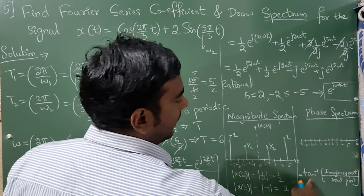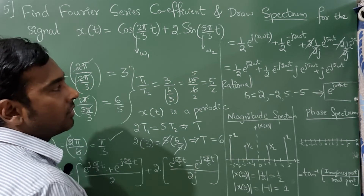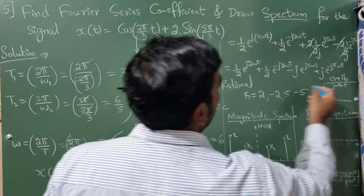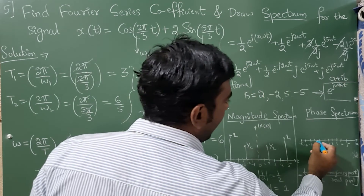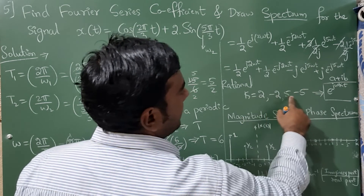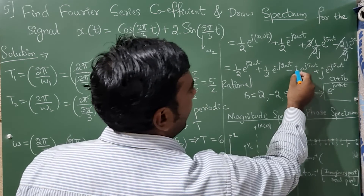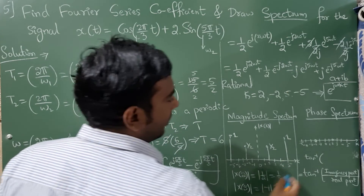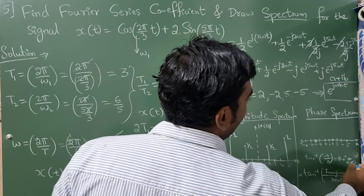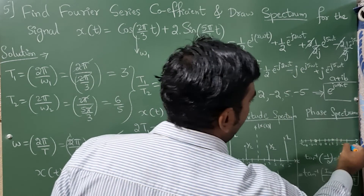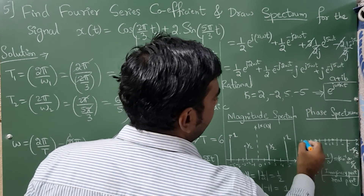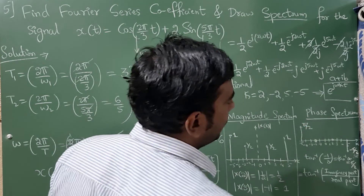For the phase spectrum, we use tan⁻¹(imaginary part / real part). At k = ±2, the coefficients are real (1/2), so the phase is 0. At k = 5, the coefficient is −j (imaginary part −1, real part 0), so phase = tan⁻¹(−1/0) = −π/2. At k = −5, the phase is +π/2. This completes the answer.